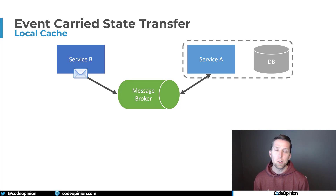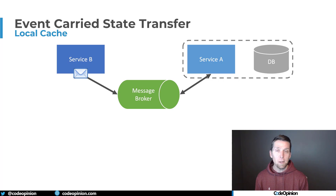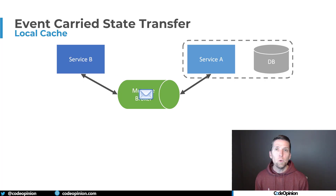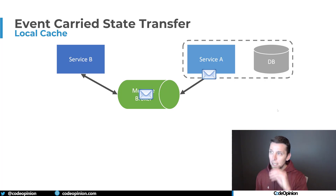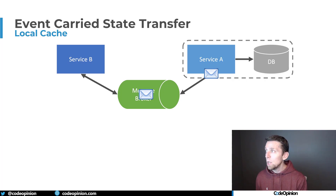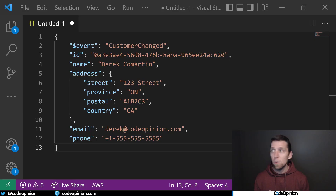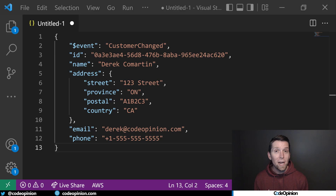The answer to that problem is event carried state transfer, which is the idea that our events are not just notifying that something changed, but they actually contain the state of an entity that we're going to use to keep our local cache updated. This means we don't need to make that callback to the producer, to service B. So in service B, when a product changes, it includes the details of that entity — how it exists at that moment when it changed. When service A picks up that event, it can immediately update its own local cache copy without needing to reach out to service B. As an example, we have a customer changed event that contains all the state about a customer: an ID, a name, an address, an email, a phone, etc. — everything representing the state of that customer when it changed. This is what gets published and used to update the local cache copy.